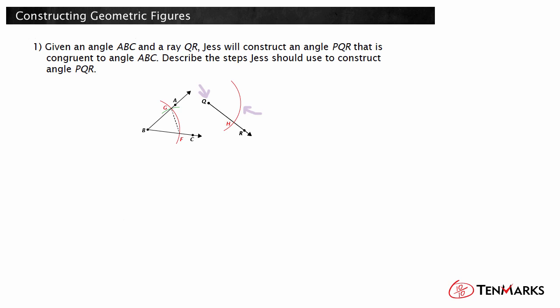Now place the compass point on point F and set the width to exactly the distance between F and G. Then, without changing the compass width, place the compass point on point H and draw an arc that will intersect the previous arc drawn on the new figure. Label the intersection P.